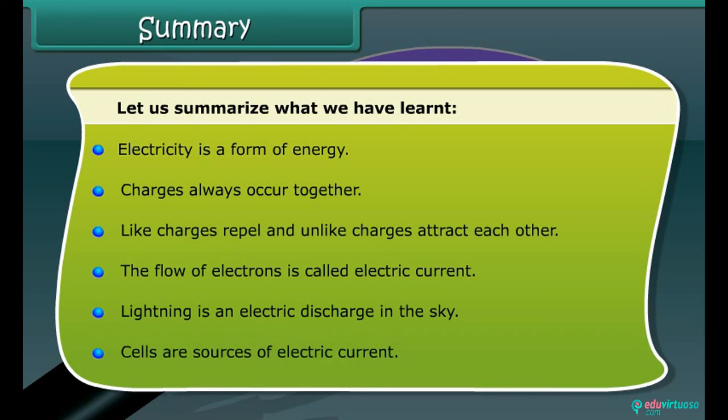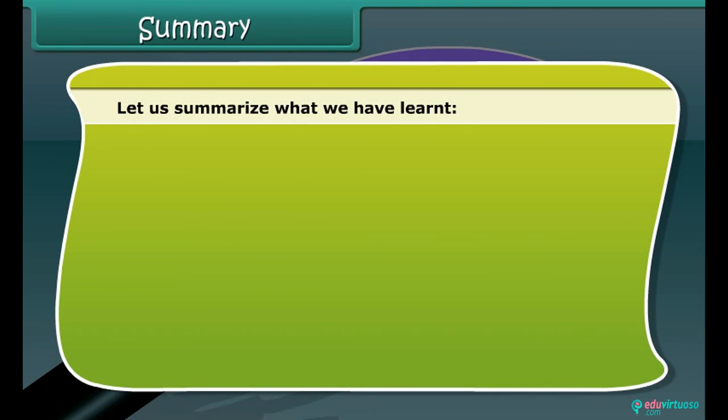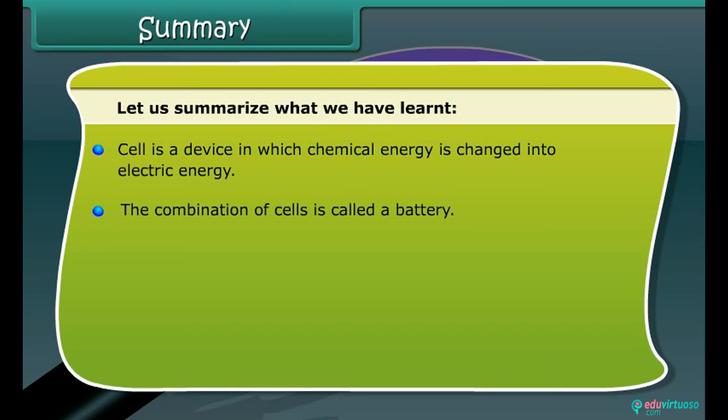Cells are sources of electric current. A cell is a device in which chemical energy is changed into electric energy. The combination of cells is called a battery. Electric current is measured by an instrument called an ammeter. Metals and inorganic salts are good conductors.